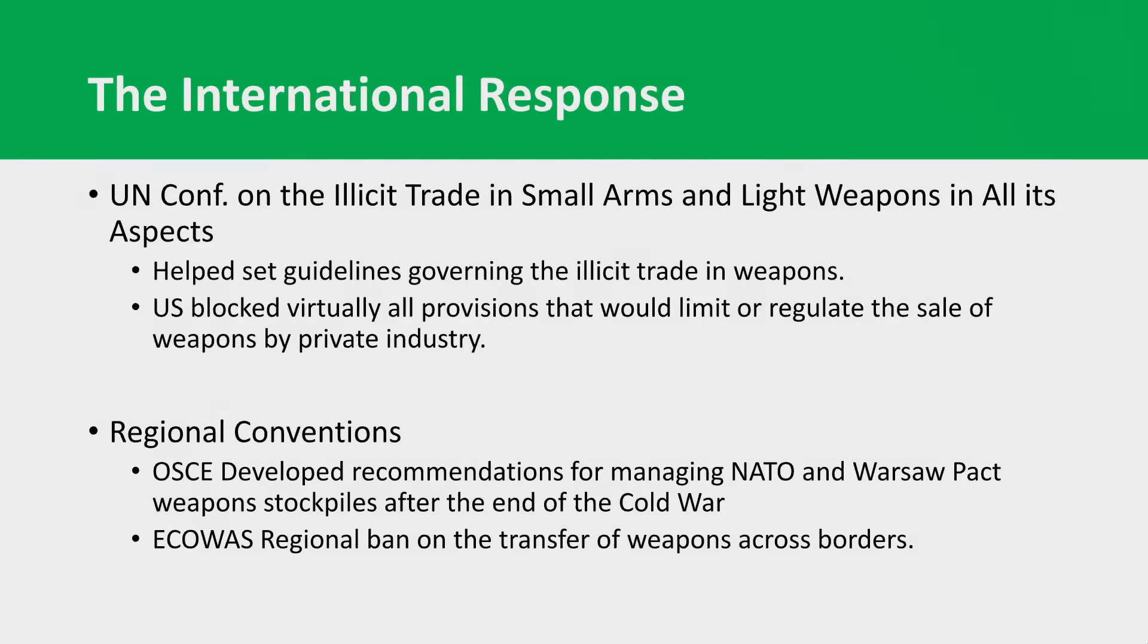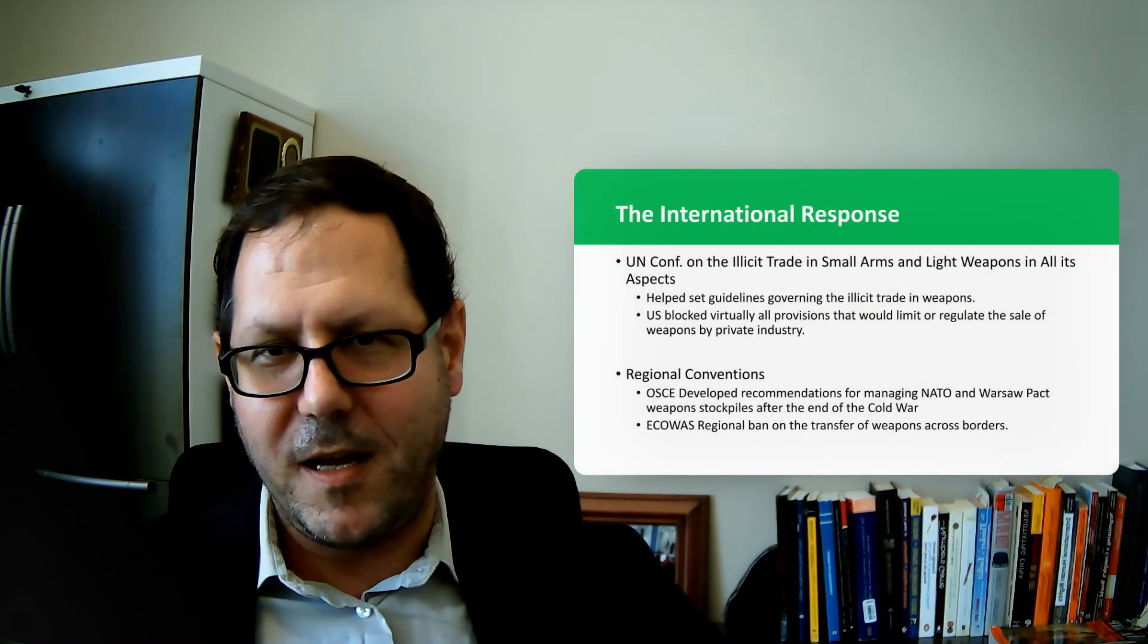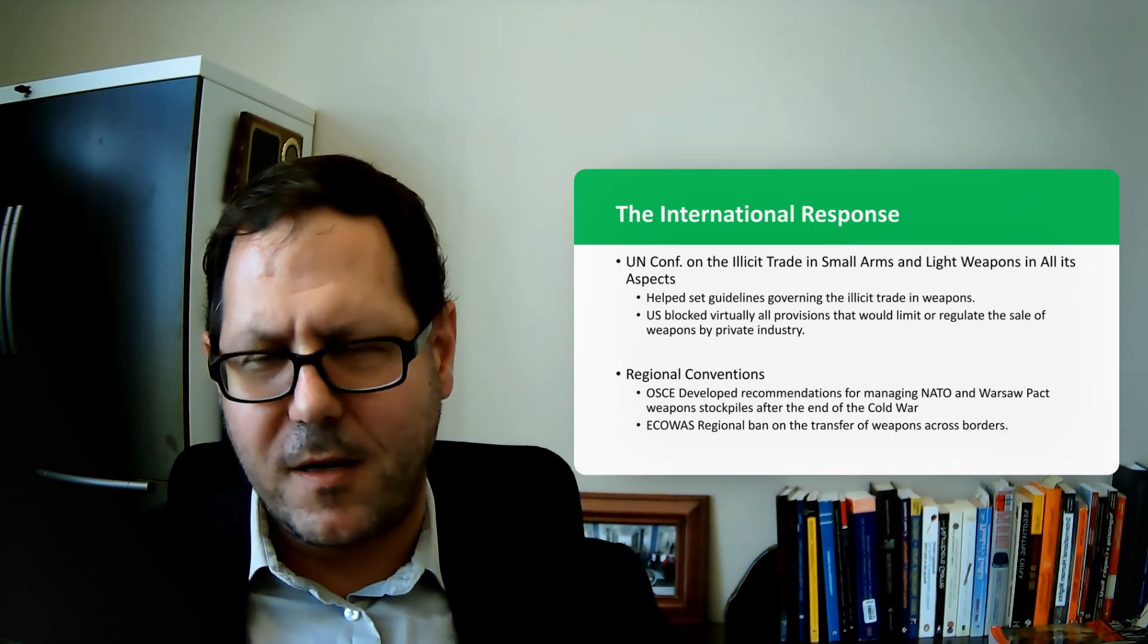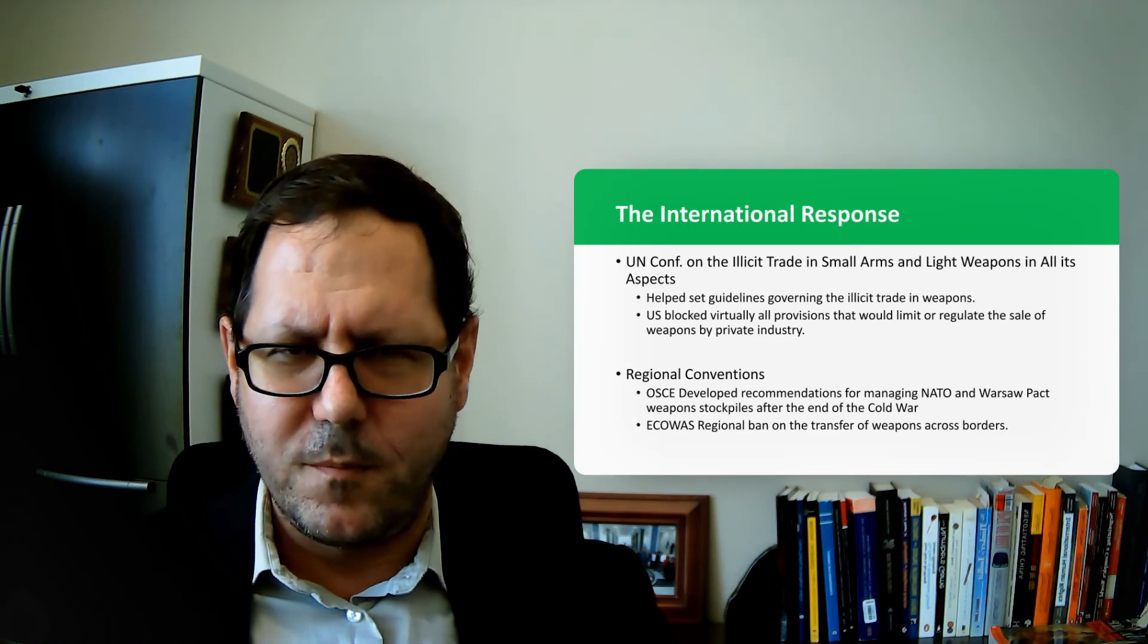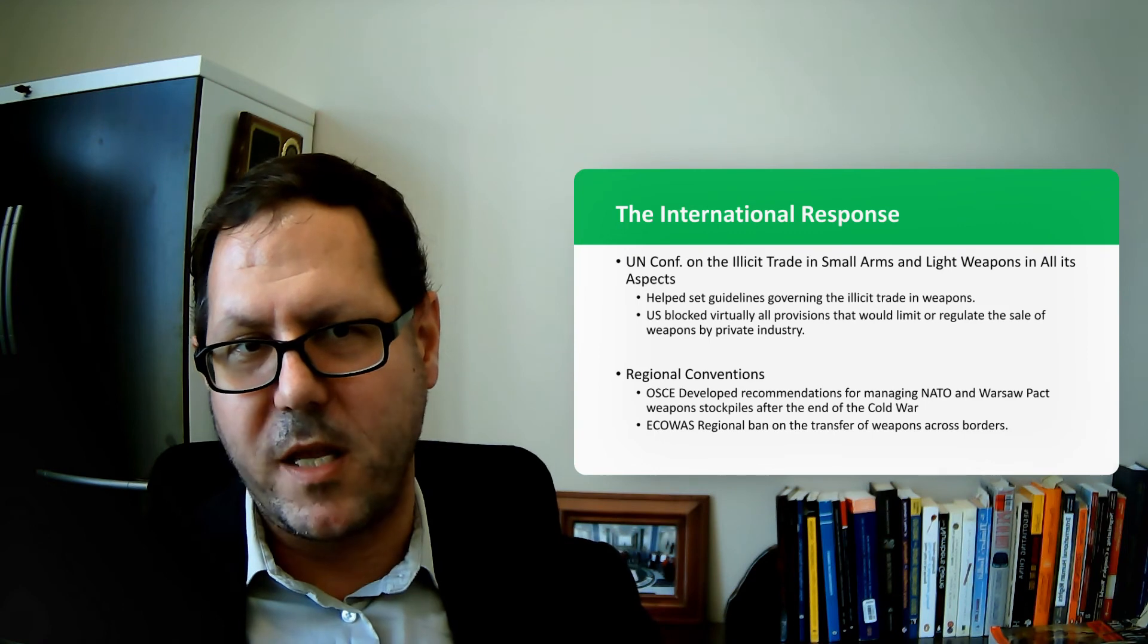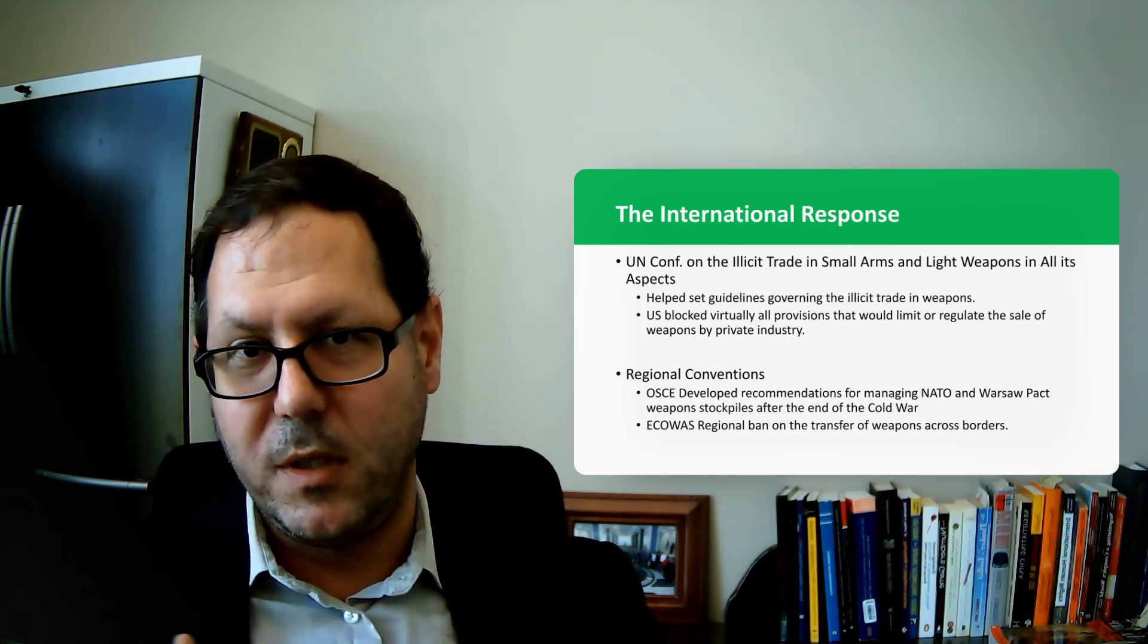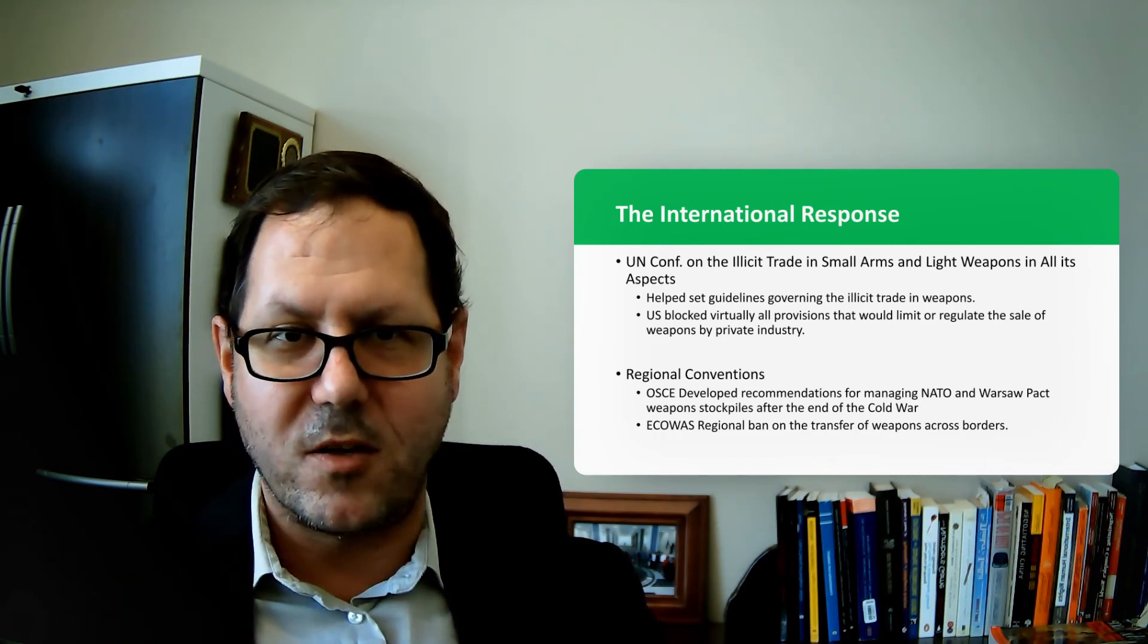I'll finish up this conversation by noting that states have tried to respond to the flood of small and light arms, at least from their perspective and in a variety of different ways. About a decade and a half now, the UN helped negotiate a treaty on the illicit trade of small arms and light weapons in all its aspects that would allow for states to limit the transfer of small and light arms across borders to try to crack down on that illicit trade.